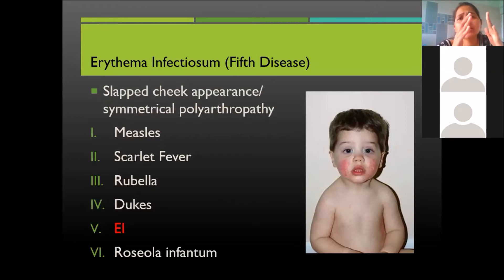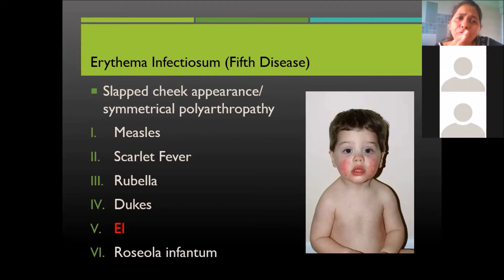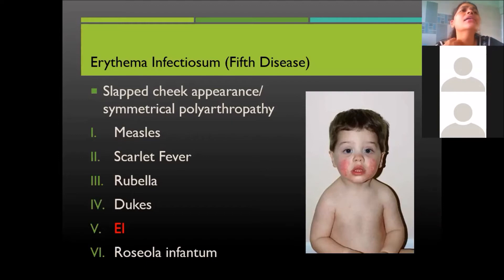Note that this sequence has no chronological relation to the order in which a baby would get these diseases. For example, a baby is first likely to get measles, followed by scarlet fever, then rubella — there is no fixed order like that.